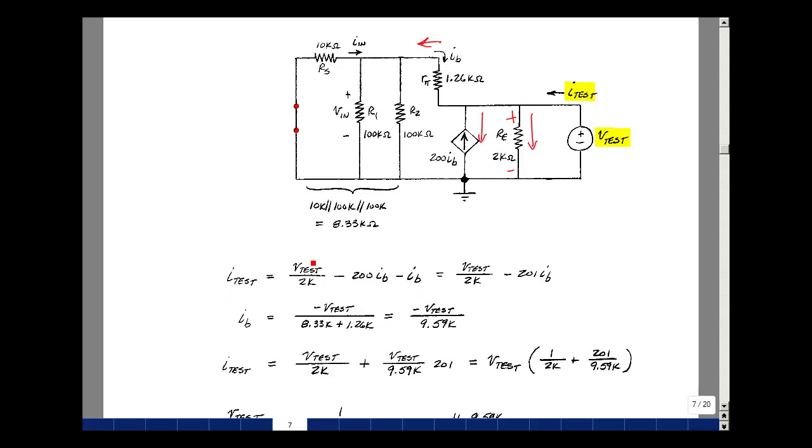I've got V_test in terms of I_test, but another unknown here, I_B. Let's put these two together to get 201 I_B. So I've got to find the current I_B in terms of V_test or I_test.